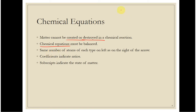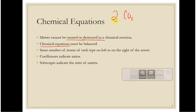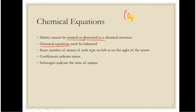We learned in the last couple units how to write formulas like carbon dioxide is CO₂. We can't change the subscript — if we change that to CO₃, that's not carbon dioxide anymore. We can't adjust the formula. But what we can do is change the coefficients, or the big numbers, to change how many of each of these molecules we have in the reaction.